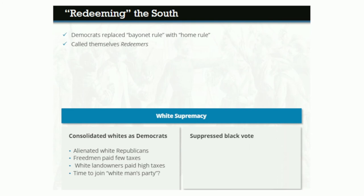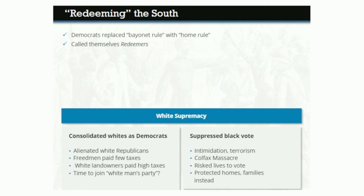Second, Redeemers continued to suppress the black vote through intimidation and terrorism. The Colfax Massacre was just one example of what could happen to African Americans who stood up for their political rights. Despite the 15th Amendment's guarantee of their right to vote, black men increasingly risked their lives if they exercised that right on election day. Tragically, many freedmen made the difficult decision to protect their homes and families rather than cast a ballot.